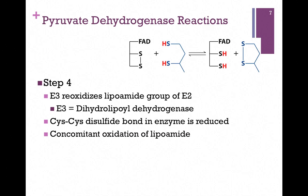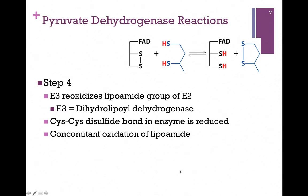Dihydrolipoyl dehydrogenase — E3 — is going to re-oxidize that lipoamide cofactor. It's able to do that because it also has a cysteine disulfide bond. It also carries an FAD cofactor. In this process, we're simply going to exchange the redox partners. Here's the reduced lipoamide and the oxidized disulfide in E3 — we just exchange that. Now the lipoamide of E2 has become re-oxidized, and we've reduced the disulfide bond on E3.